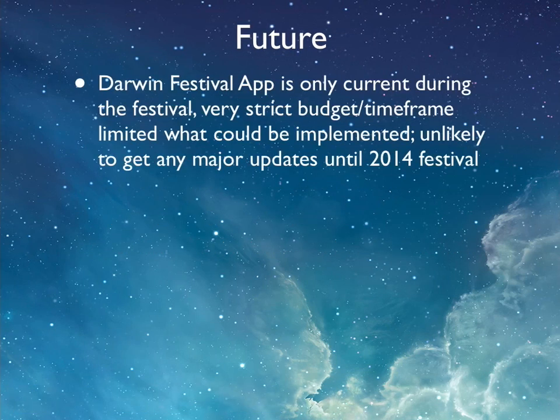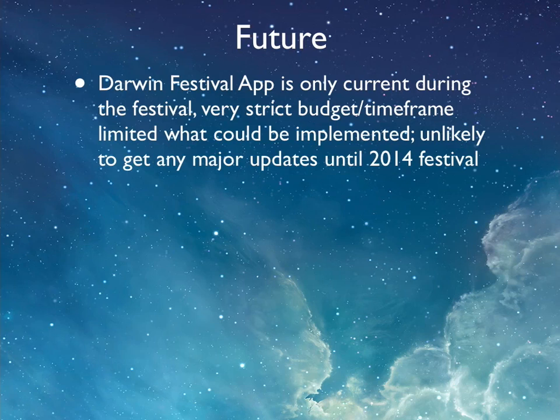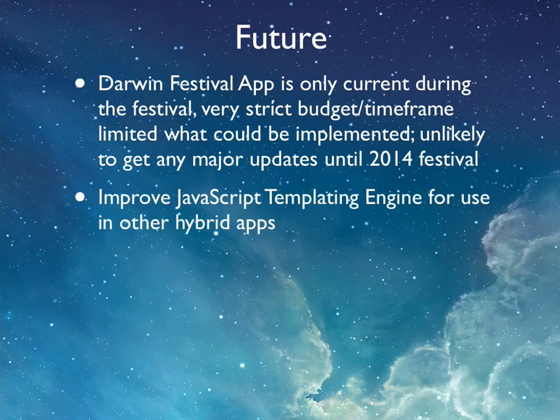For the future — the Darwin festival app is only current during about one month of the year, and with a strict budget and timeframe it's unlikely I'll get to do real work on it until next year, so at best small bug fixes. What I'd like to do is improve my templating engine, because for outputting layouts it's really nice and easy — as long as you understand JSON objects it's really quick. I want to be able to use it in other apps where a hybrid approach is appropriate.